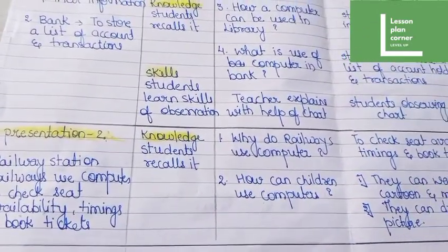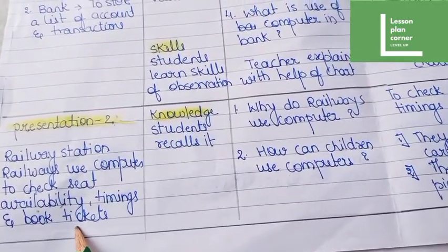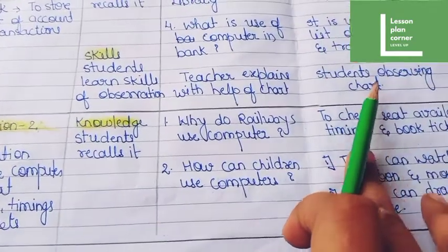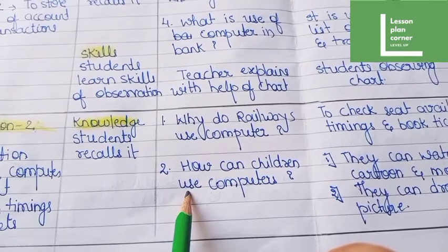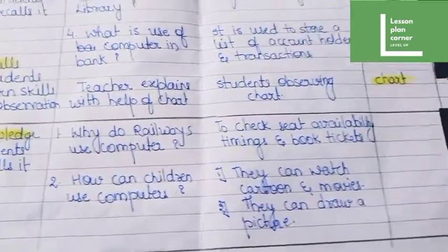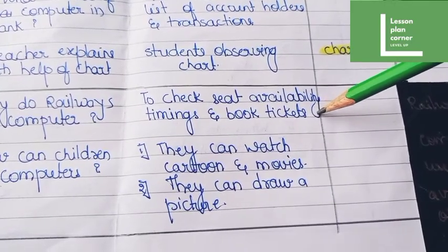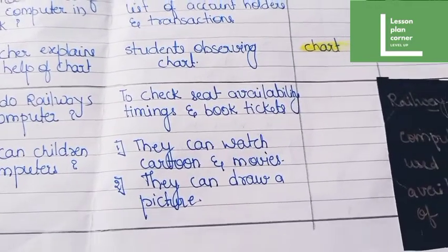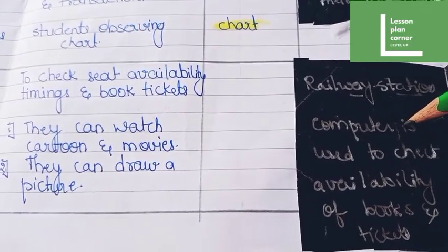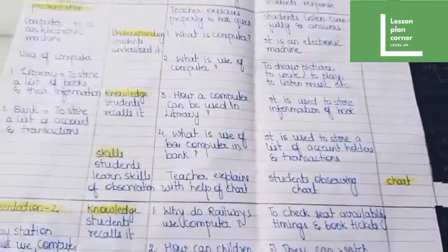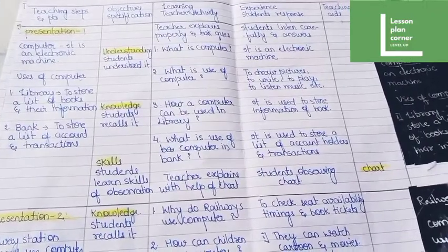Now here you can see Presentation 2. We have to explain everything like the use of computer at a railway station. Here you can see questions related to that: how do railways use computer? How can children use computer? And here you can see the expected answers from students, as well as the blackboard work. This is the overall look of our lesson plan.